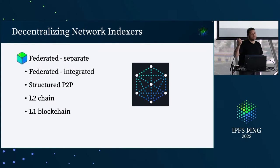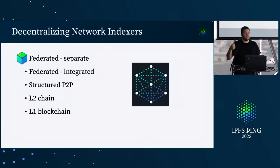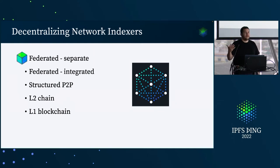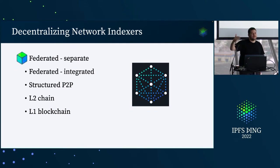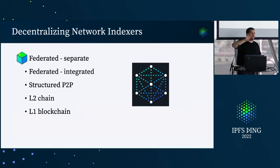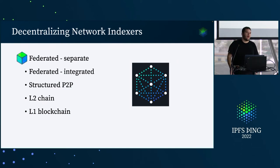Here are five different ideas — five different paths, though there are many more potential directions. One very simple thing is to follow a model similar to the gateway model, where there are just a lot of different indexers and a registry of indexers. If there are fewer than 10 big indexers, this can work fairly well. Ten different organizations and networks tend to work reasonably well. It's not ideal, but federated separate systems could work for some period of time — the gateways are doing that today and working quite well.